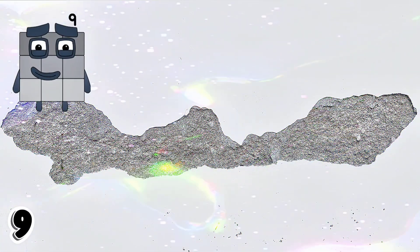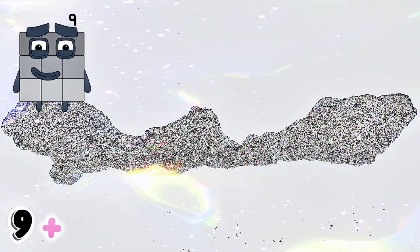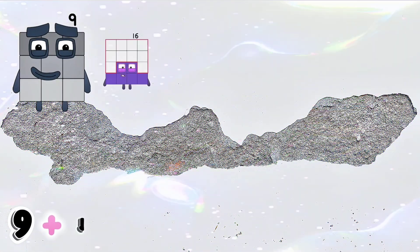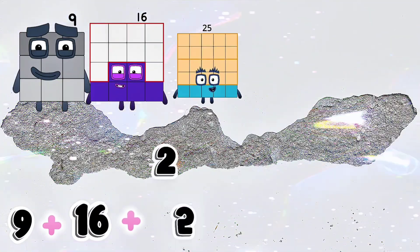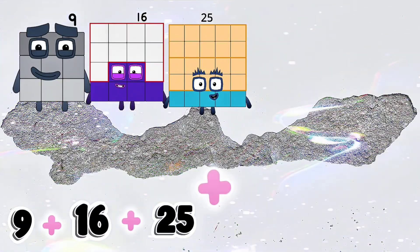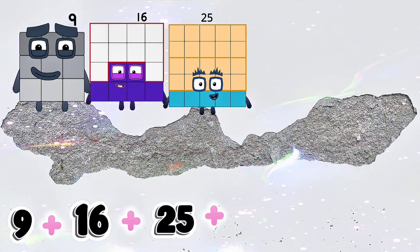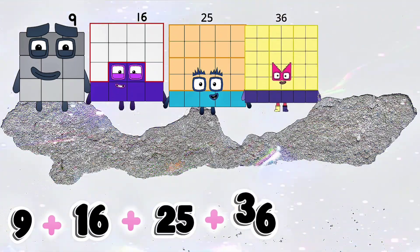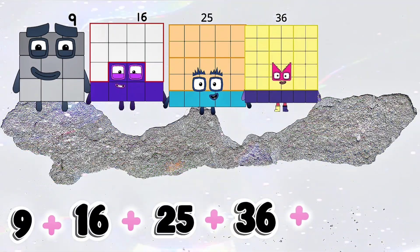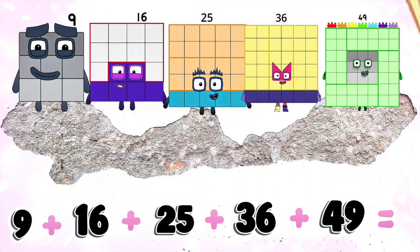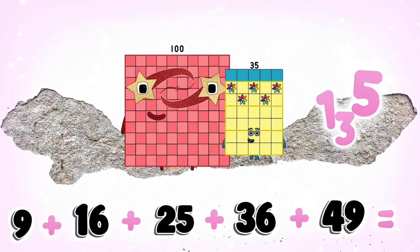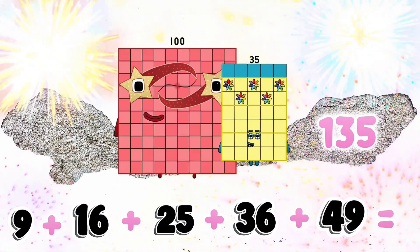9 plus 16 plus 25 plus 36 plus 49 is equals to 135.